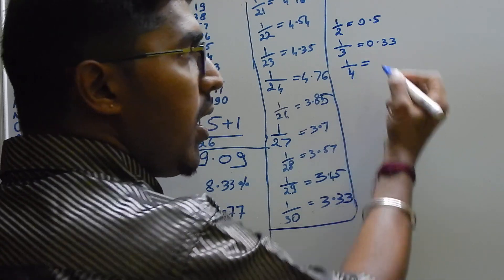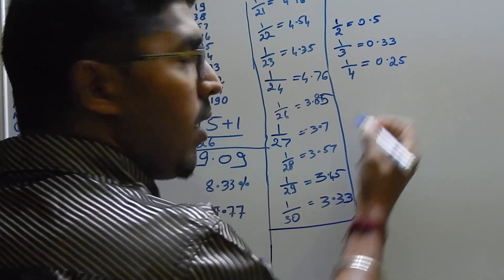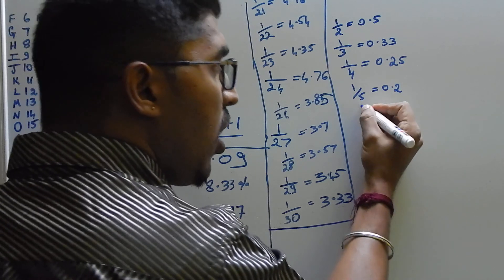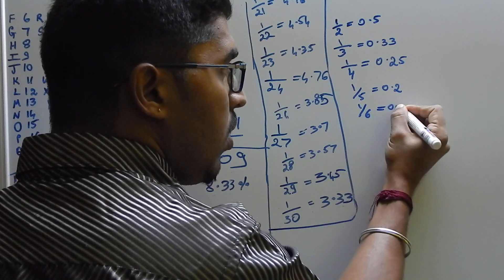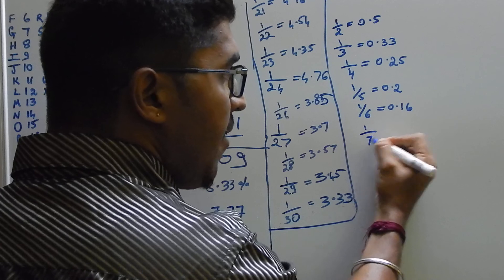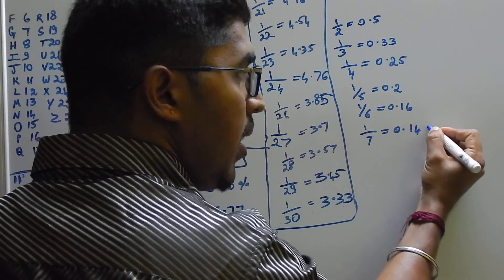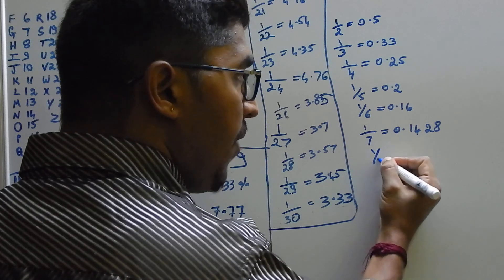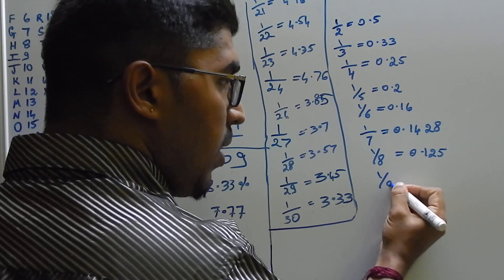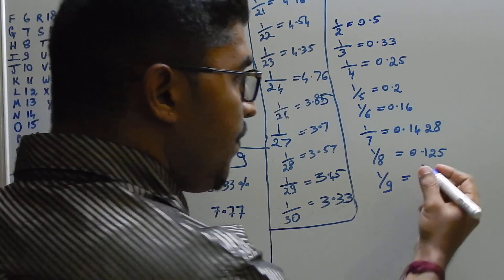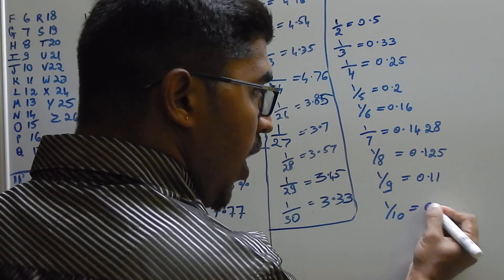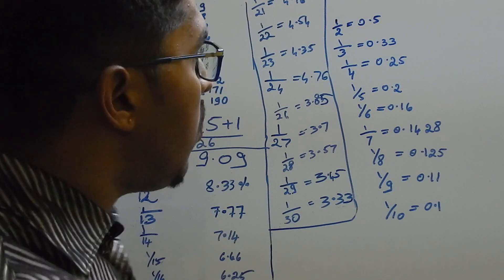Reciprocal of 4 is 1 by 4, that is 0.25. Reciprocal of 5 is 0.2. Reciprocal of 6 is 0.16. Reciprocal of 7 is 0.14. Reciprocal of 8 is 0.125. Reciprocal of 9, 1 by 9, is 0.11. Reciprocal of 10 is 0.1.